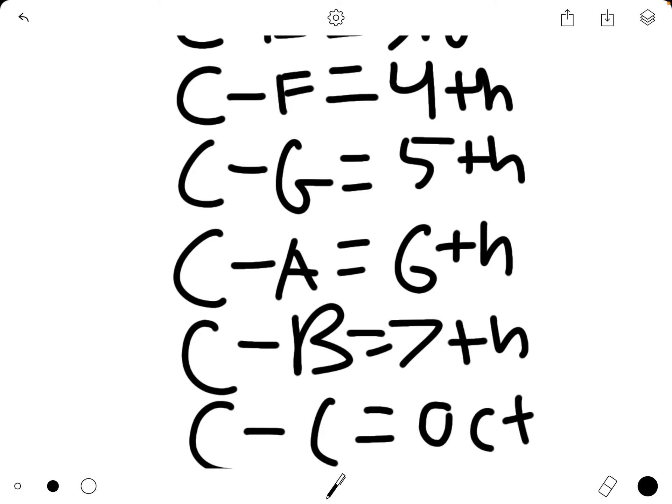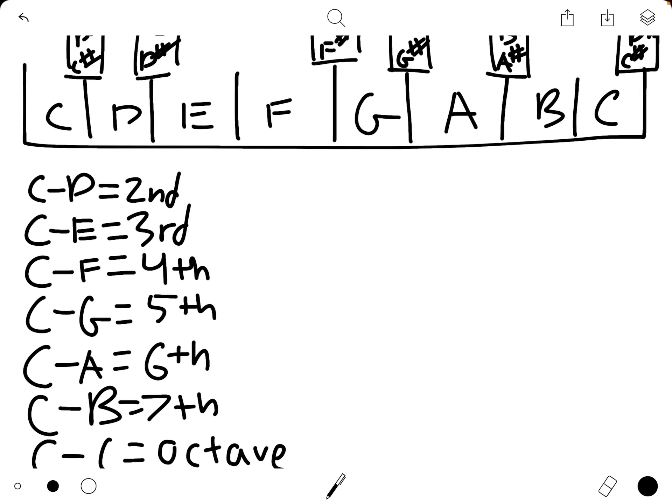And then C going up to the next C is the word octave. Oct, like octagon or octopus. Octave, meaning eight tones or eight notes. And if we count, that's what we have. We have one, two, three, four, five, six, seven, eight.